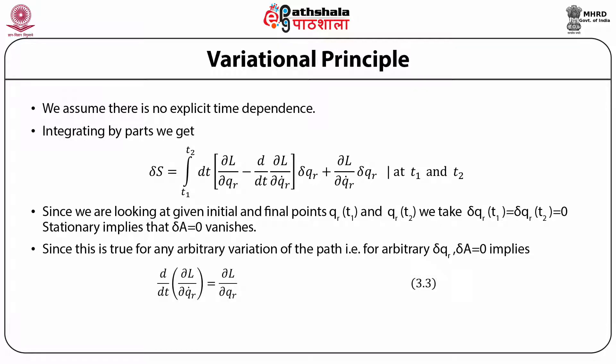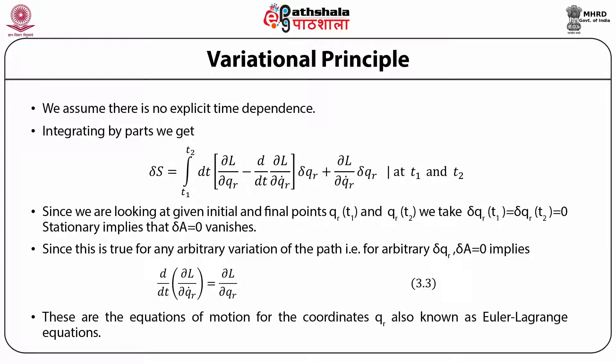Since this is true for any arbitrary variation of the path, that is for any arbitrary delta qr, delta S equal to zero implies d/dt of dL/dqr-dot equals dL/dqr. This is an extremely important equation which follows from the Lagrangian. These are the equations of motion for the coordinates qr, and they are also known as the Euler-Lagrange equations.